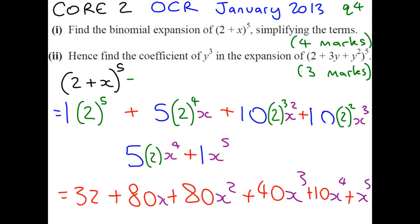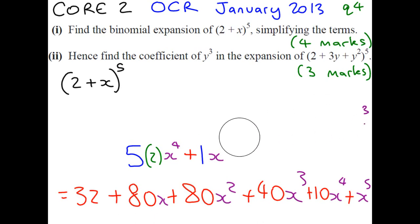In the second part, we have something that looks extremely complicated. Now, what I want us to do is compare the first part to what the second part is asking us. Hopefully, you'll see that it's the exact same thing as long as we pretend that the x and the 3y plus y squared are the same. So, effectively, we are making a substitution that x equals 3y plus y squared.